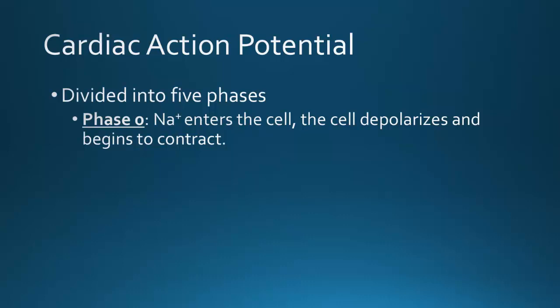During phase zero, sodium moves into the cell through sodium channels, causing the interior of the cell to become electrically positive relative to the exterior. This results in a change in transmembrane potential from negative 90 to about negative 70. Then, as threshold is reached, more sodium channels allow a rapid influx of sodium, increasing the inside of the cell from negative 70 millivolts up to positive 30.